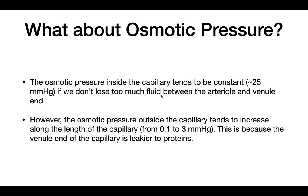So how does the osmotic pressure vary? The osmotic pressure inside the capillary tends to be constant at around 25 mmHg, and it tends to remain constant if we don't lose or gain too much fluid between the arterial and venule end of the capillary.